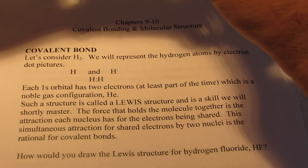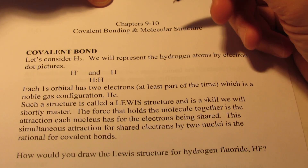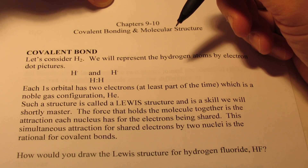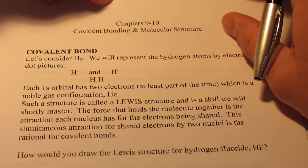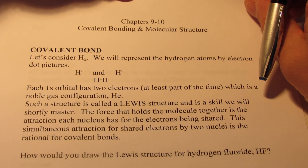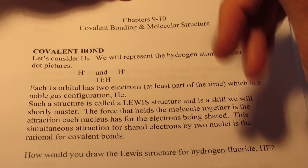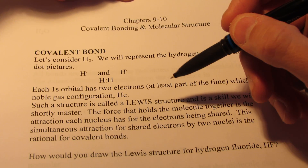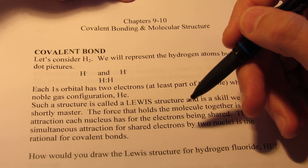Today we're going to talk about covalent bonding, how to draw a Lewis structure, and from that how to predict shape, bond angle, and polarity, and maybe even predict hybridization. We won't be able to lecture on what hybridization is, but we should be able to describe the hybridization about the central atom of a molecule.